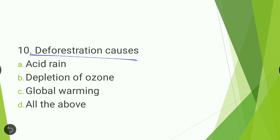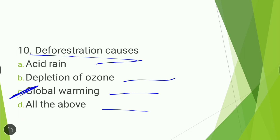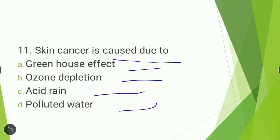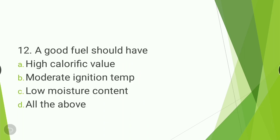Next question: deforestation causes — acid rain, depletion of ozone, global warming, or all of the above? The answer is global warming. Next question: skin cancer is caused due to — greenhouse effect, ozone depletion, acid rain, or polluted water? The answer is ozone depletion.